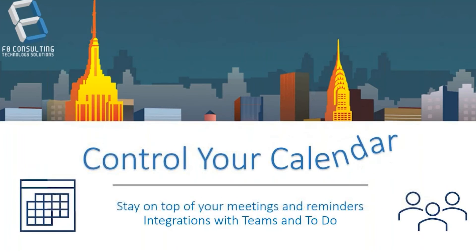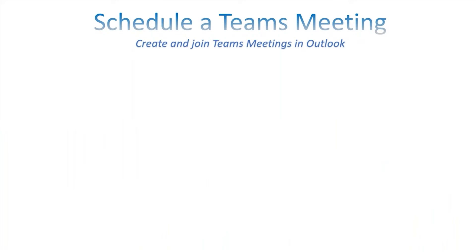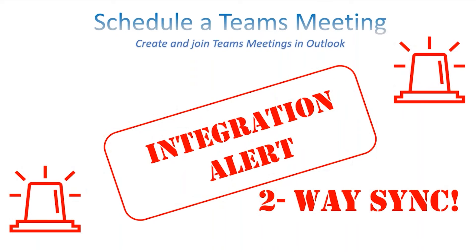Next we want to talk about controlling your calendar to stay on top of meetings and reminders — and there are some great integrations with Teams and To Do. First, let's go over scheduling a Teams meeting. You can create and join Teams meetings directly in Outlook, which is a great integration. When you're in Outlook's calendar, you'll see a 'New Teams Meeting' add-in at the top. If you don't see it, go into add-ins and search for it.